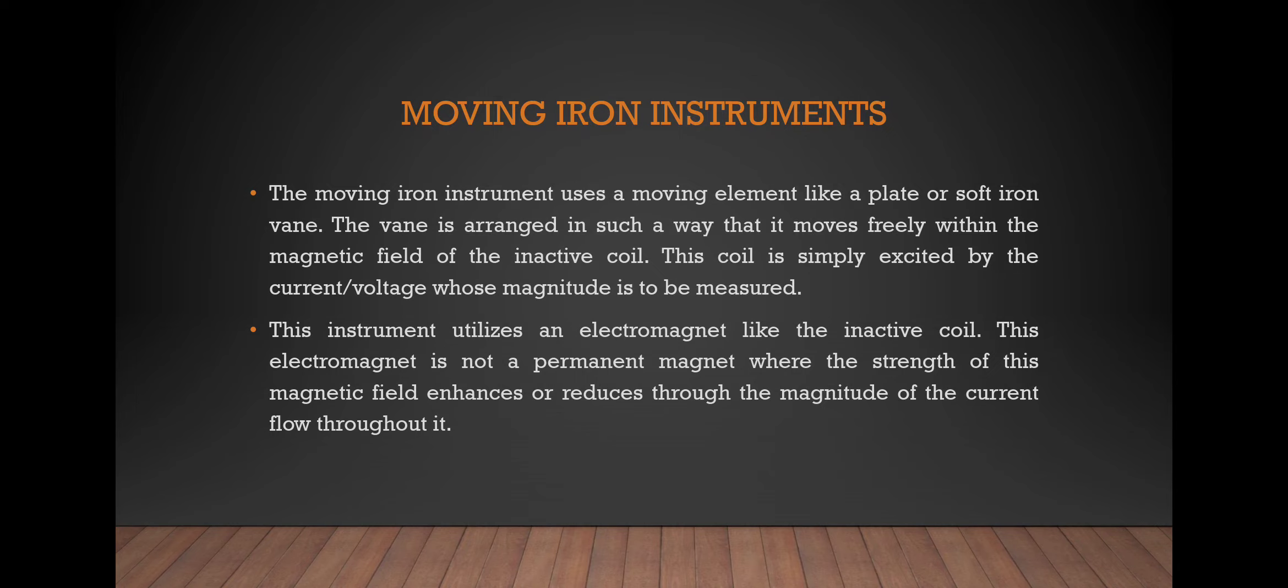Moving iron instruments use a moving element like a plate or soft iron vane. The vane is arranged in such a way that it moves freely within a magnetic field of the inactive coil. The coil is simply excited by the current or voltage whose magnitude is to be measured.